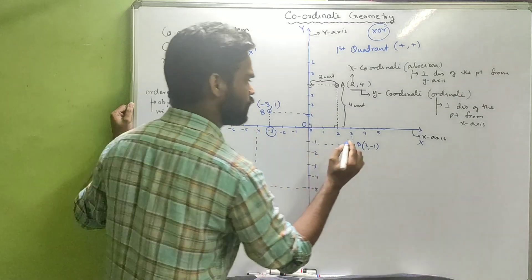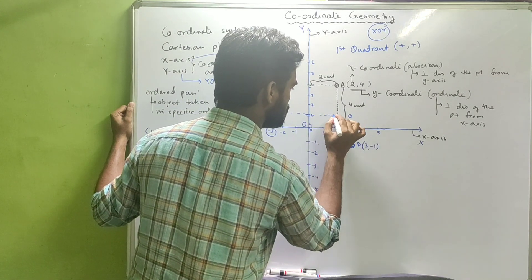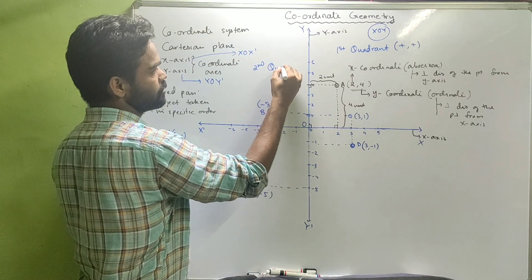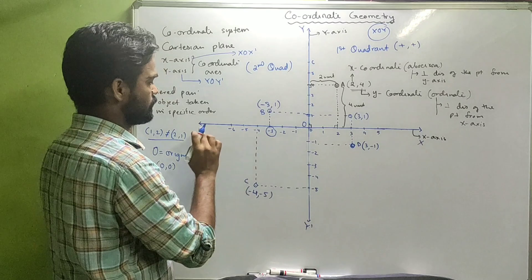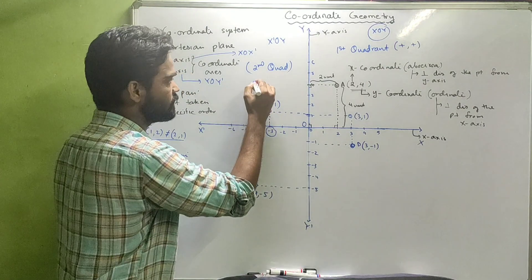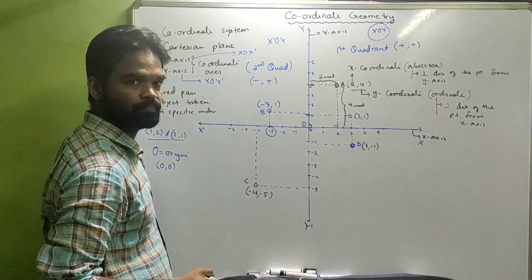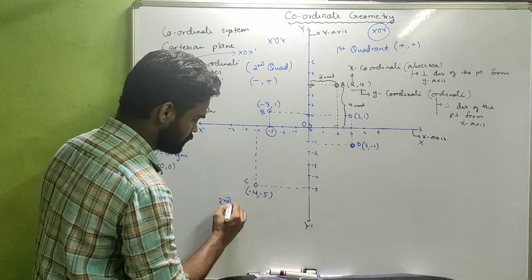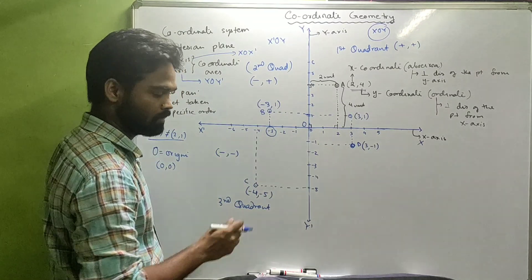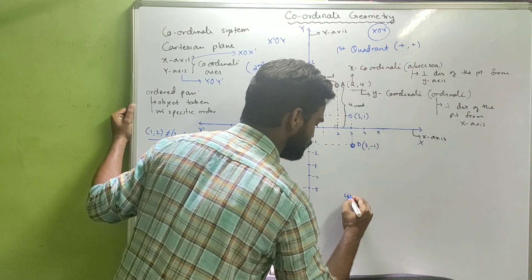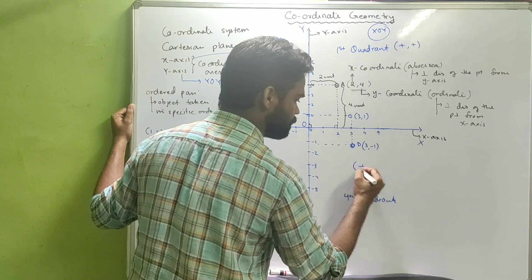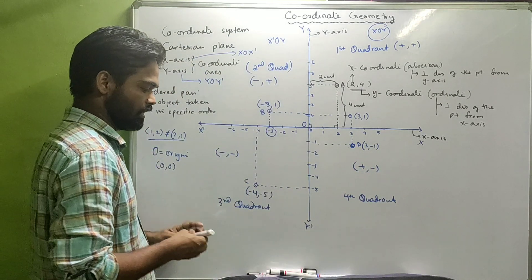In the first quadrant, both the abscissa and ordinate are positive - for example, taking a point there gives (3, 1). The second quadrant is the region XOY', where the x-coordinate or abscissa is negative and the y-coordinate is positive. In the third quadrant, both abscissa and ordinate are negative.